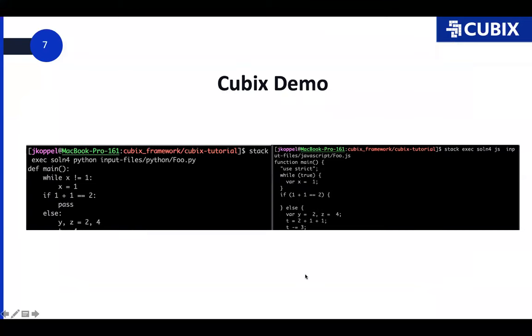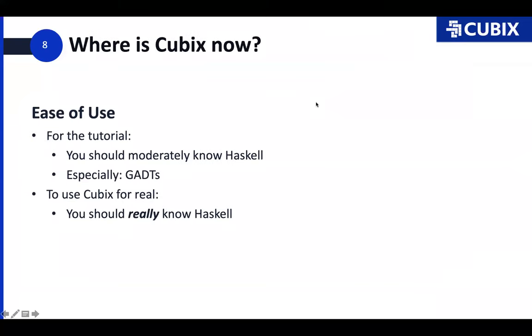So that is the power of Cubix, and this transformation works for all five languages currently supported by Cubix, which are C, Java, JavaScript, Lua, and Python. So today we're going to learn a bit about how this works.